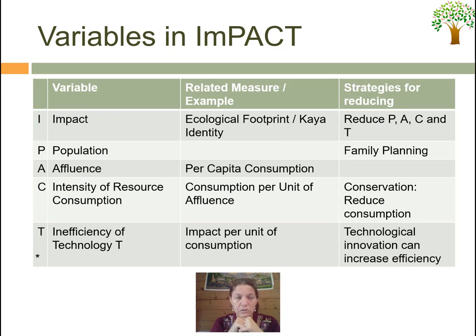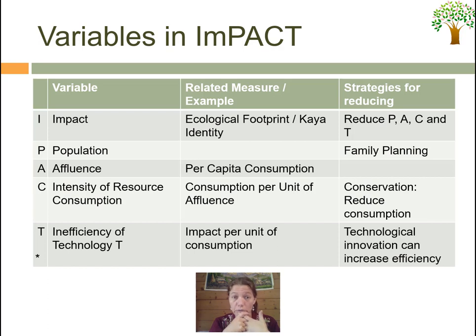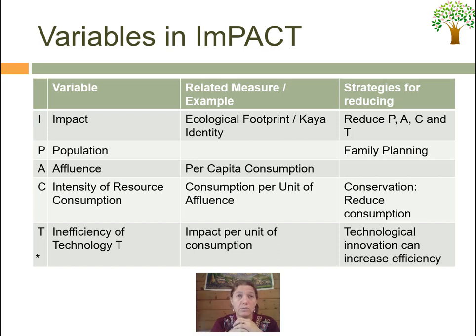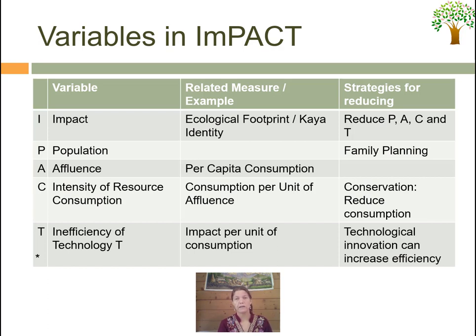C stands for the intensity of resource consumption — consumption per unit of affluence. Per GDP dollar, how much do we really consume, especially in terms of material matter. We can reduce this variable by looking into conservation — how can we actually reduce consumption of physical goods.